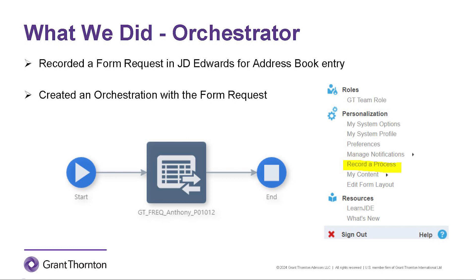Once I got the form request finalized, I created an orchestration to wrap it in. I mapped the variables to the inputs, and I got an orchestration that enters data into the address book. Then, once the form request and orchestration are set to enter data in the address book, I can set up a vendor record.